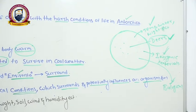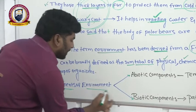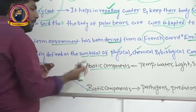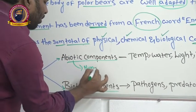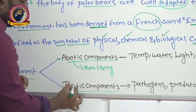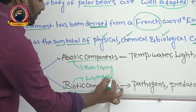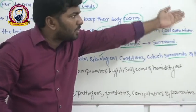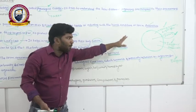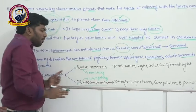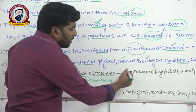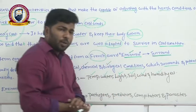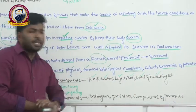What are the components of the environment? It contains abiotic components as well as biotic components. Abiotic means non-living things; biotic means living things. Examples of abiotic components are temperature, water, light, soil, wind, and humidity — all of which surround the organism and influence its survival.